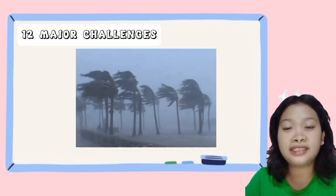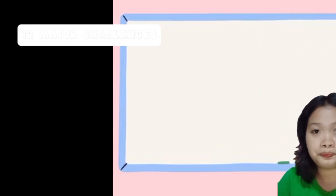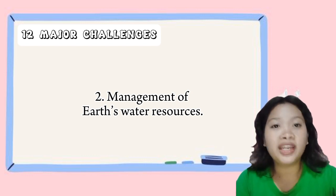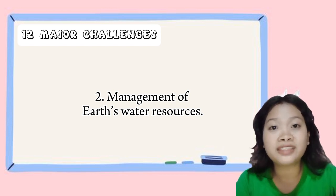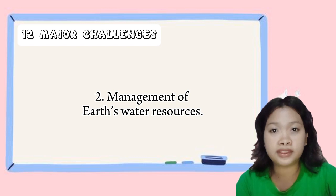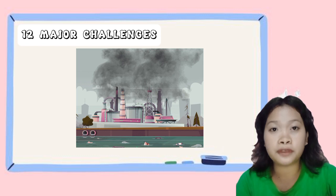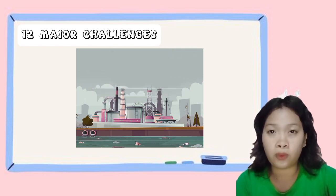Another example is the increase in the frequency and intensity of extreme weather events such as hurricanes, heat waves, and tornadoes. Next is the management of Earth's water resources. Managing Earth's water resources is a major challenge as water is essential for life but is becoming increasingly scarce in many parts of the world. The depletion of groundwater is caused by over-extraction for agriculture, industry, and domestic use. Pollution of rivers and lakes is caused by the release of industrial and agricultural waste into waterways. The effects include water shortages, reduced water quality, and harm to aquatic ecosystems.